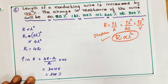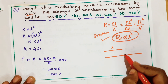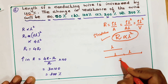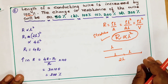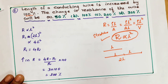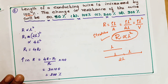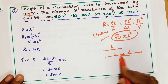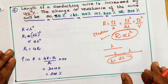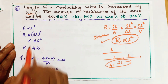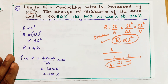A 100 percent increase in length means the new length is 2L (original L plus one more L). According to the equation, resistance ∝ L², and with new length 2L we get resistance ∝ (2L)² = 4L². This means resistance increases by 4 times.